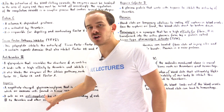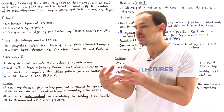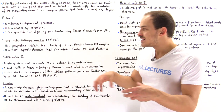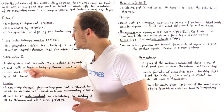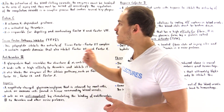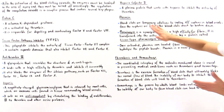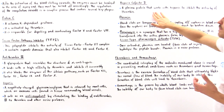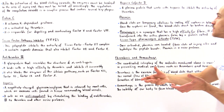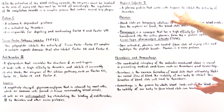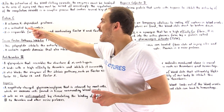Heparin acts as an anticoagulant by stimulating the binding of anti-thrombin III to thrombin and other serine proteases. The process of coagulation means forming blood clots, so anticoagulation means not forming blood clots — and that's exactly what heparin does. It stimulates anti-thrombin III to inhibit the activity of thrombin. Heparin cofactor II is a protein that floats in the blood plasma and assists heparin in binding onto anti-thrombin III to inhibit the activity of thrombin.